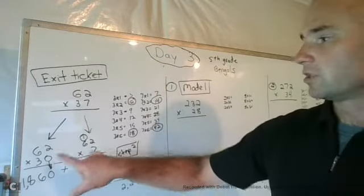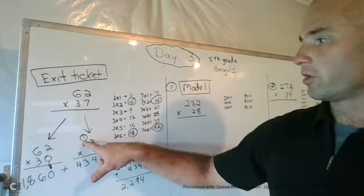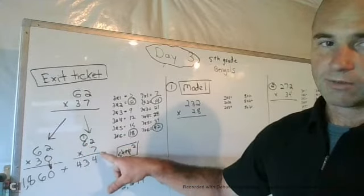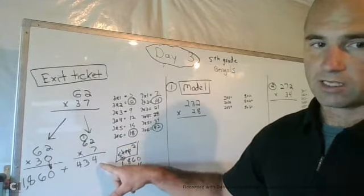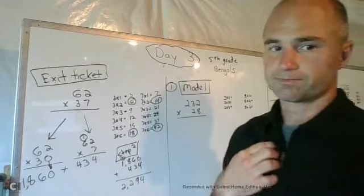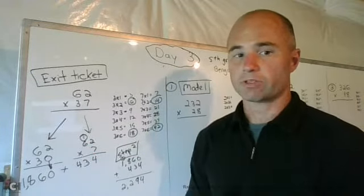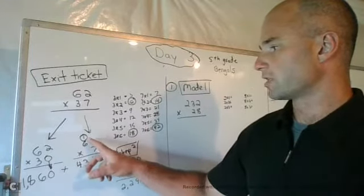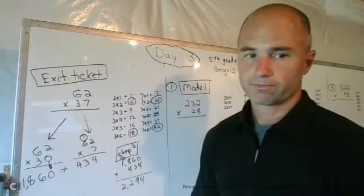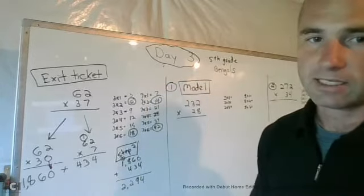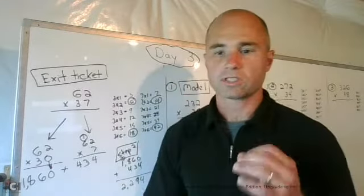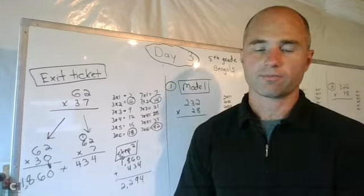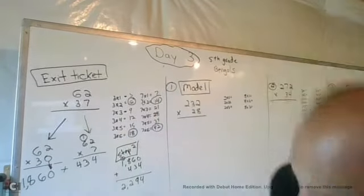So did you expand it? And then did you regroup when you needed to regroup, like we did here when we did two times seven, we had 14, so we left the four and we carried the one. And we add what we regrouped, like we did here: six times seven equals 42 plus one gives you 43. So some possible mistakes that could have happened on your exit ticket yesterday.